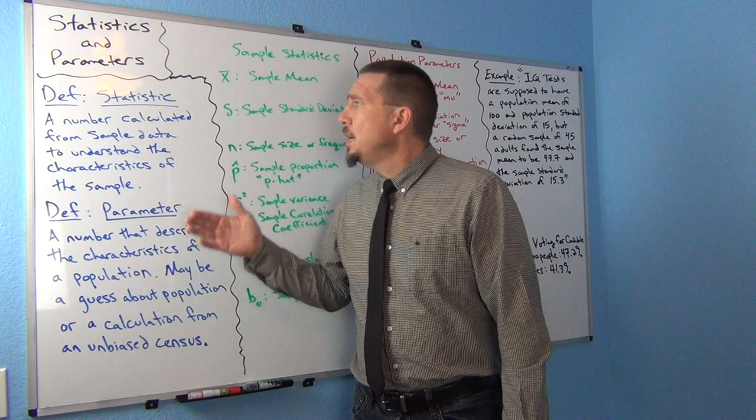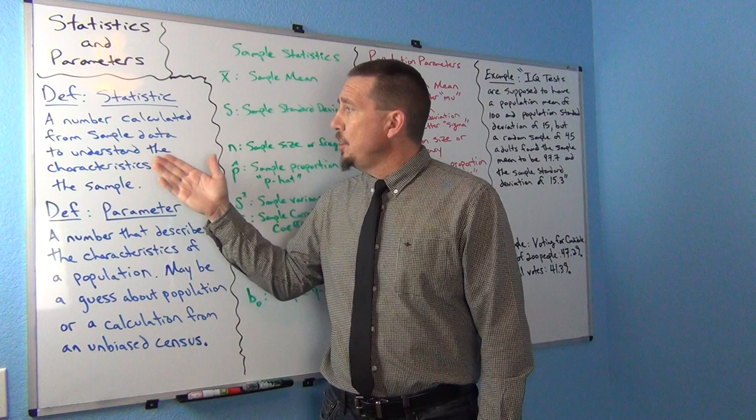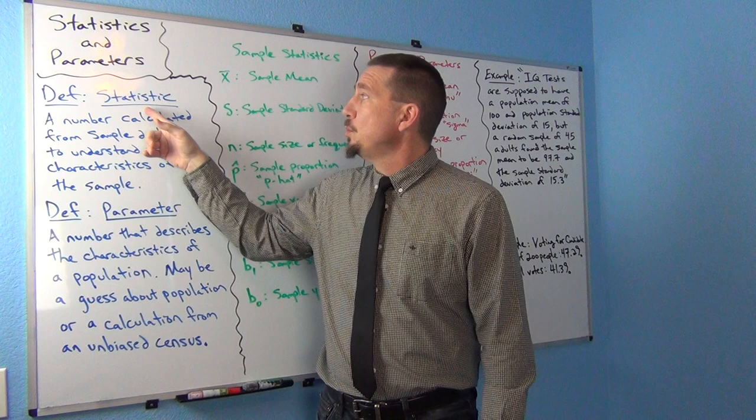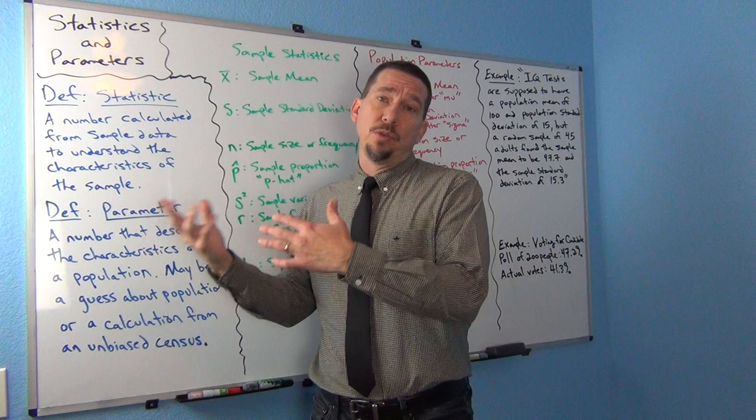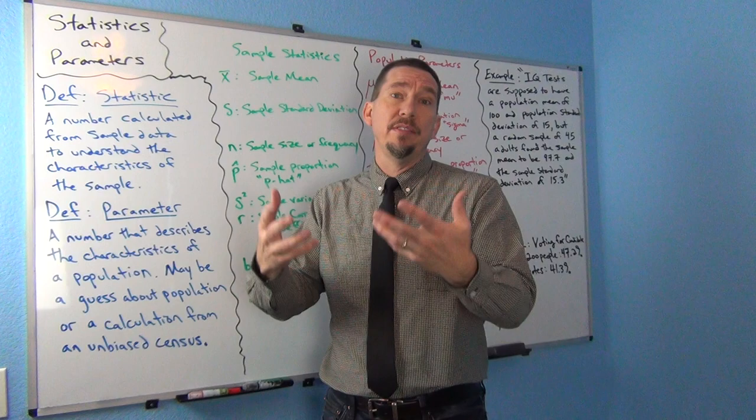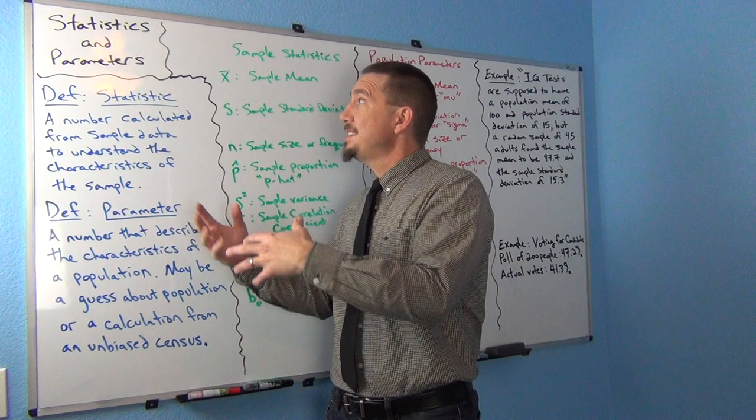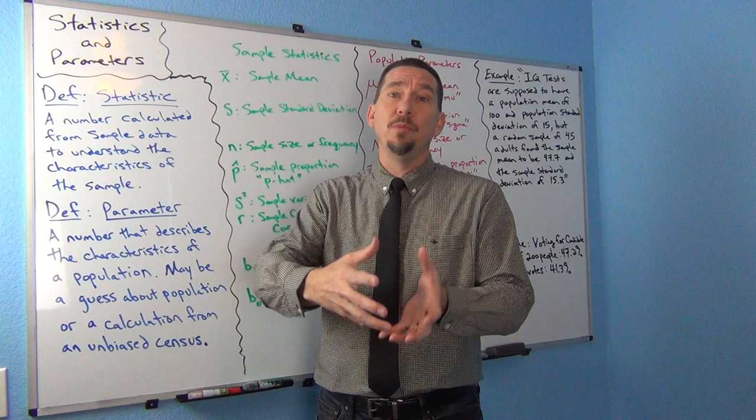A number calculated from sample data in order to understand the characteristics of the sample is called a statistic. So the word statistic is a number calculated from sample data. For example, if we calculated the mean of some sample data, we have calculated a statistic. It's also where you get the name for the class — statistics, intro stats — the study of numbers calculated from sample data and what they can tell us about the population.